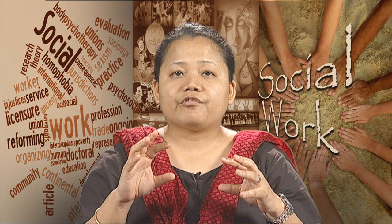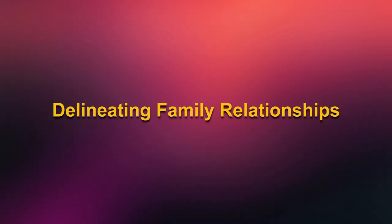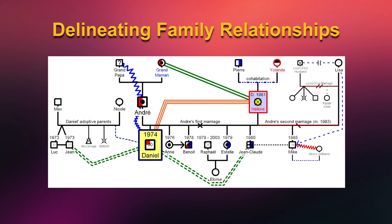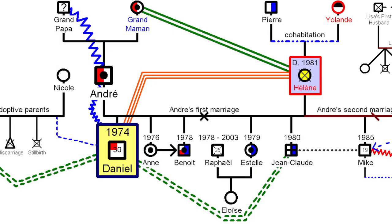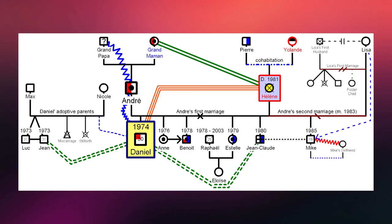The final step in constructing a genogram is delineating family relationships. Different lines are used to represent different patterns of relationships between family members and intergenerational patterns. Three bold parallel lines represent a very close relationship; two bold parallel lines represent a close relationship; and a zigzag line represents a conflictual relationship. These lines are used to connect the different symbols on the genogram.